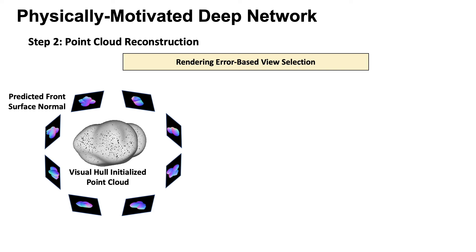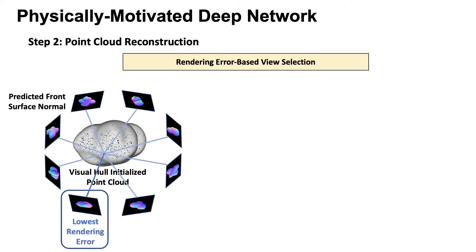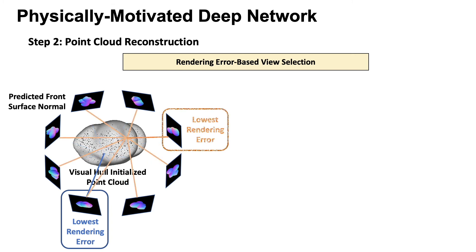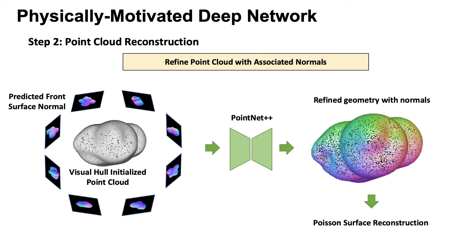Next, we refine the visual hull initialized point cloud with the estimated normals. We associate the normals with the point cloud using a rendering error-based view selection via our differentiable rendering layer. Then, we use a customized PointNet to predict refined point clouds with per-point normals, which can now be used with Poisson surface reconstruction.